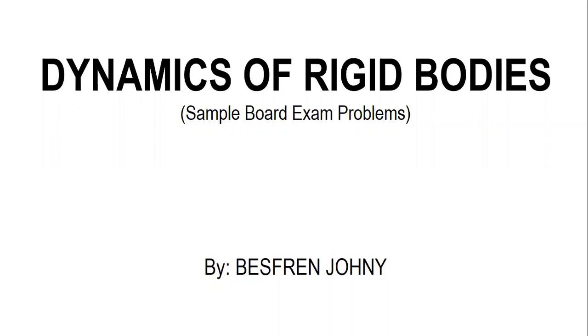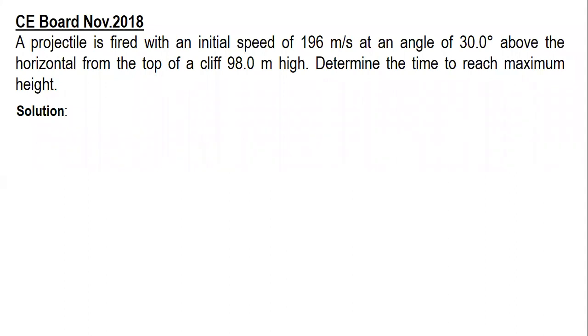In this video I'm going to share two board exam problems. The first problem came out last November 2018. It's about projectile motion. Here's the problem: a projectile is fired with the initial speed of 196 meters per second at an angle of 30 degrees above the horizontal from the top of a cliff 98 meters high.